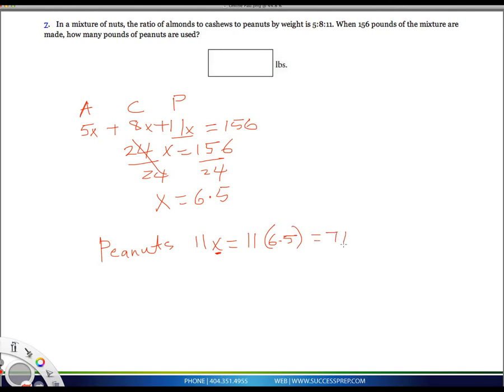That gives us a total of 71.5 for the peanuts. That's a very simple way to do it—just attach X's to the ratio, and when you do that, it allows you to add it up to whatever total you have. Your answer is 71.5 pounds.